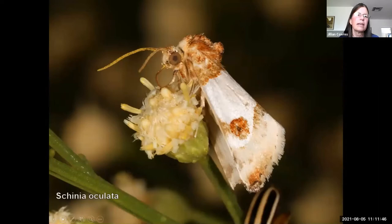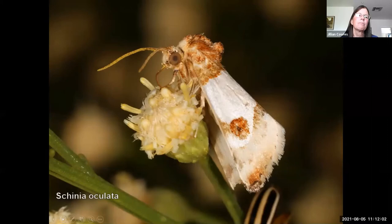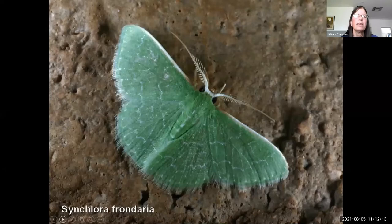Some moths are highly specialized. For example, Luscinia has to lay its eggs on desert broom, and not only that, it has to lay them where a male and female desert broom plant are in close proximity, because its larva requires feeding from both a male and a female plant to mature properly. Some caterpillars, like Synchlora, do something special: they not only feed on plants but tie plant material onto their back with silk as camouflage.